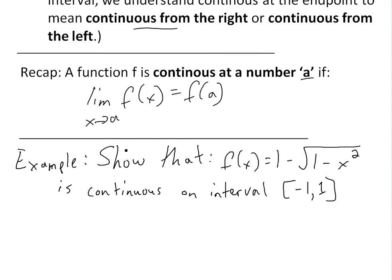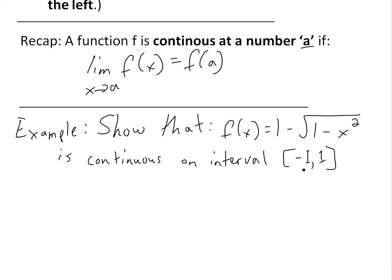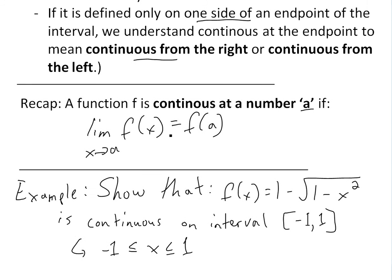The example I want to go over is: show that f(x) = 1 - √(1 - x²) is continuous on the closed interval [-1, 1]. Remember, a closed interval means you include the endpoints, which we can write as -1 ≤ x ≤ 1. To show it's continuous, we need to prove that the limit as x approaches a of f(x) equals f(a) for every number in this interval.